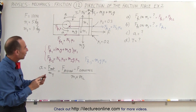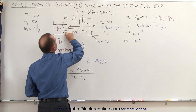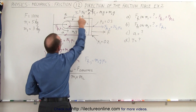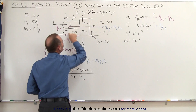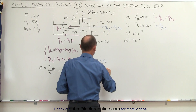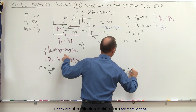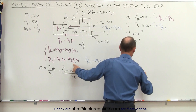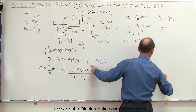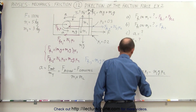Remember m2 accelerates this way and m1 accelerates this way. Looking at m1, we have force F pulling in the direction of acceleration and the two friction forces opposing it. Looking at m2, the only force is friction force 3, which also opposes acceleration. So all three friction forces oppose the acceleration and only force F aids it. This gives: a = (F − ff1 − ff2 − ff3) / (m1 + m2).